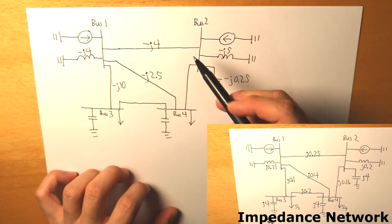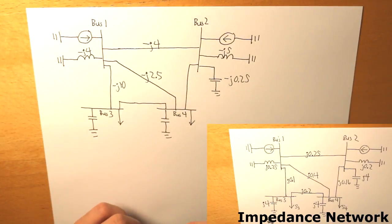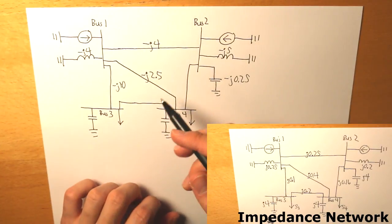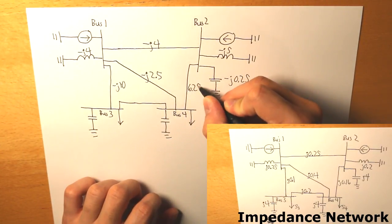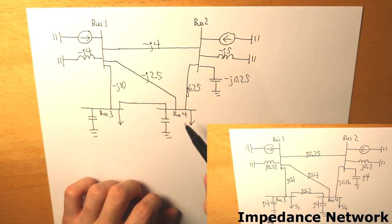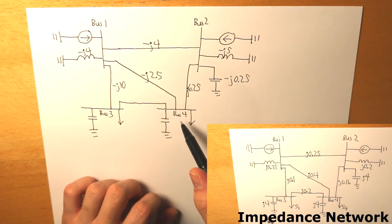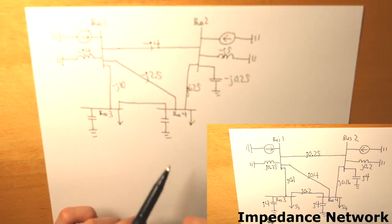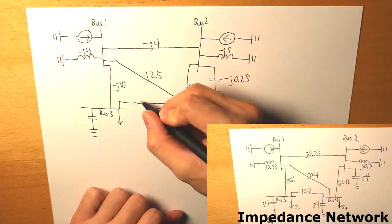The bus 2 to bus 4 line had an impedance of j0.16, and if we take the inverse of that we get negative j6.25. For bus 3 to bus 4, the initial impedance was j0.2, so the inverse gives us negative j5.